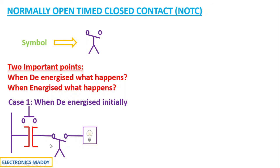When NOTC is de-energized, it will act as an open circuit. There is no current flowing in this circuit, and as a result, the light does not glow.